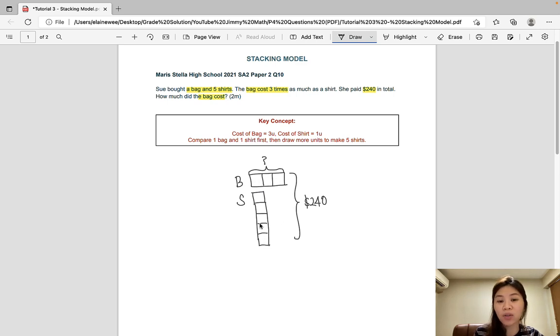Okay, eight equal units represents $240. So let's go ahead and write that down. And of course, our next step is to find one unit. $240 divided by 8, that would give us $30.